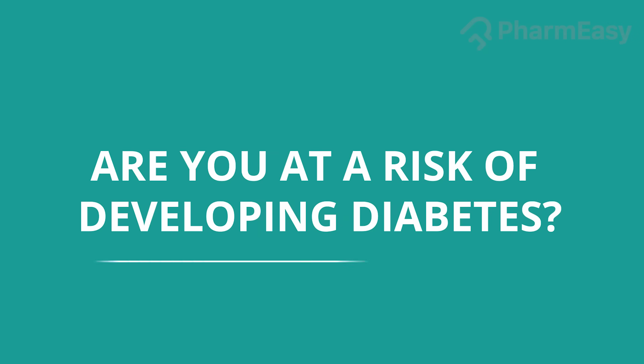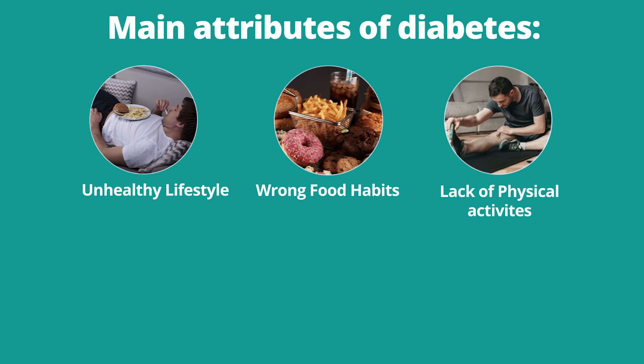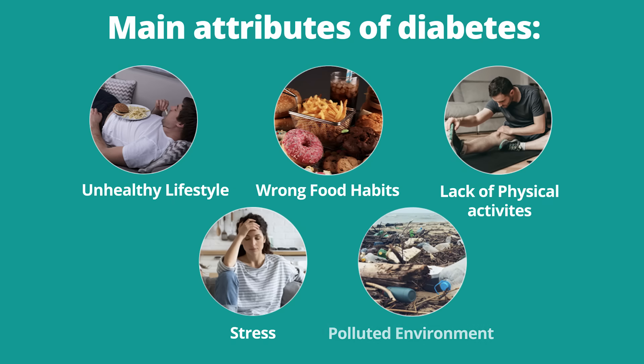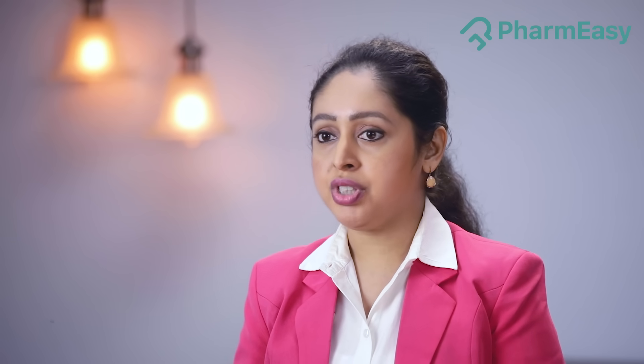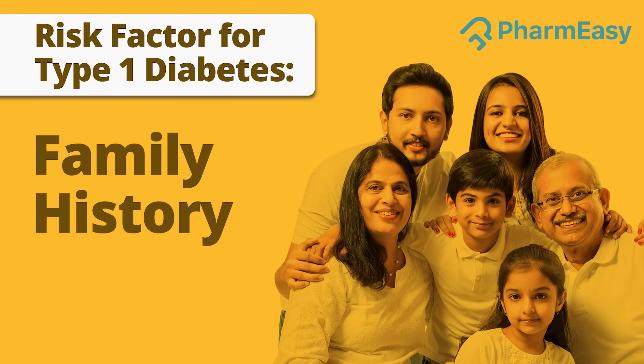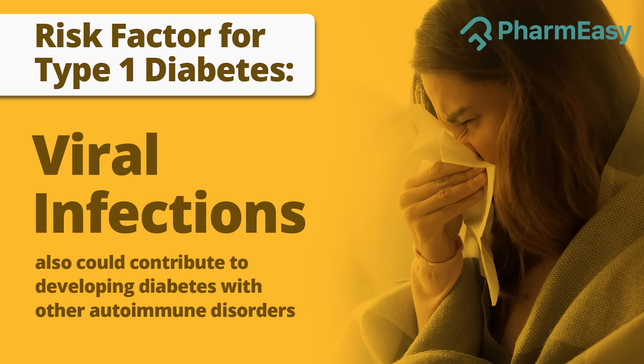Are you at a risk of developing diabetes? The emerging unhealthy lifestyle, wrong food habits, lack of physical activity, and stress coupled with a polluted environment are the main attributes of diabetes. It could also be genetic. The risk factors for type 1 diabetes are not as clear as they are for pre-diabetes and type 2 diabetes. Known risk factors for type 1 include family history — having a parent, brother, or sister with type 1 diabetes — age, as it is more likely to develop when you're a child, teen, or young adult, and some viral infections.